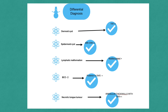A third differential is lymphatic malformation. Lymphatic malformations are multilocular and septated, while a ranula is always unilocular. Lymphatic malformations also show fluid-fluid levels, while ranulas do not tend to have fluid-fluid levels.